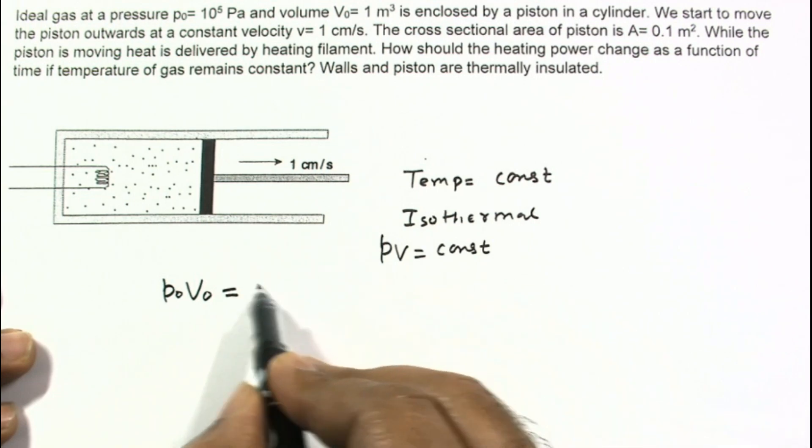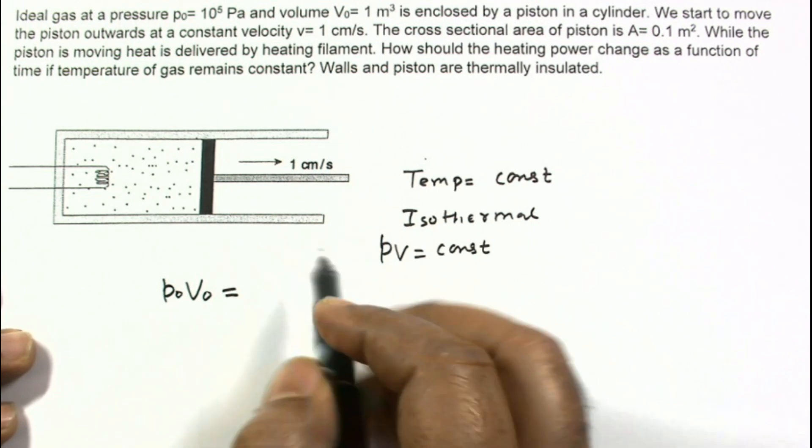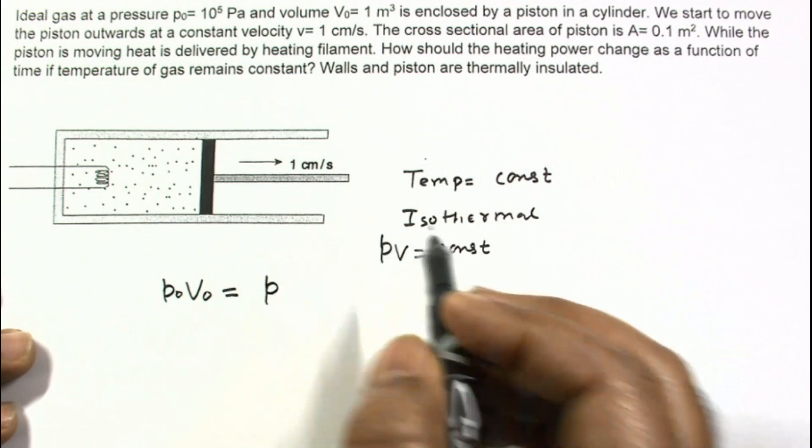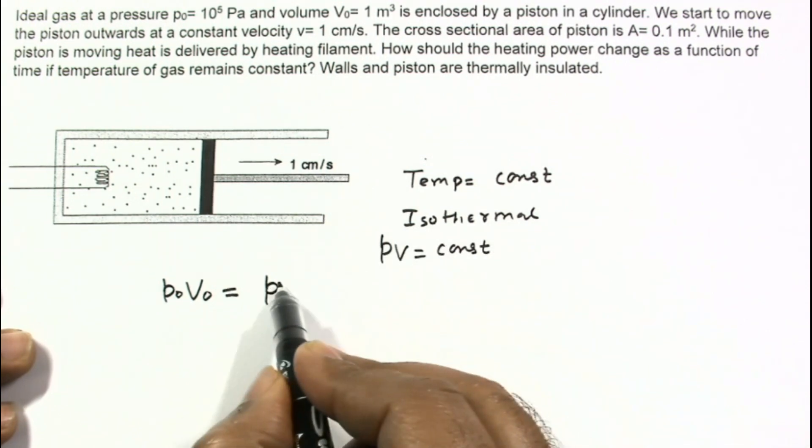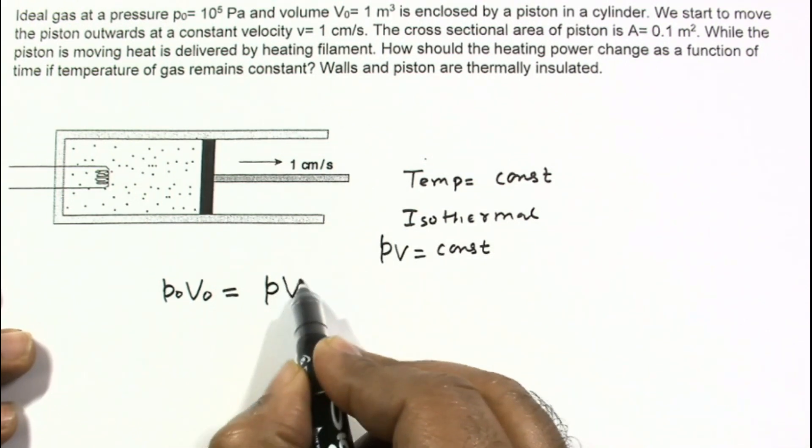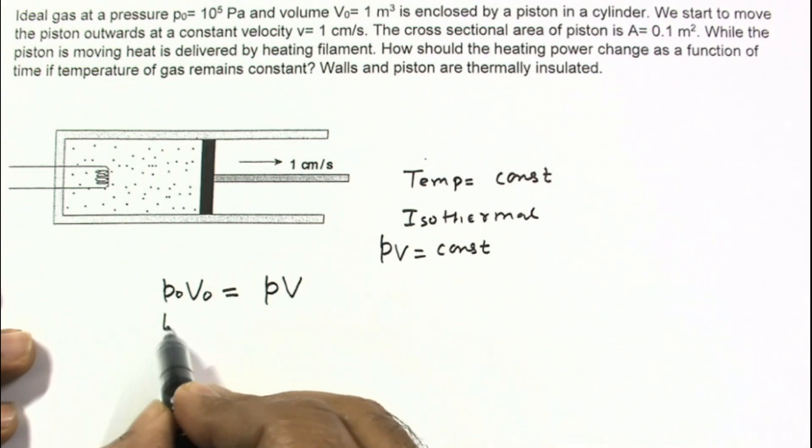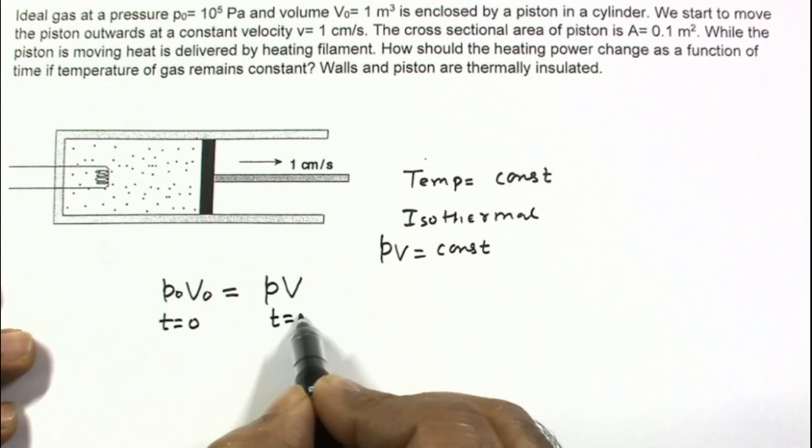I am taking pressure at some T is equal to T, this is P and volume as V. So this is for T equals 0 and this is for T equals T.